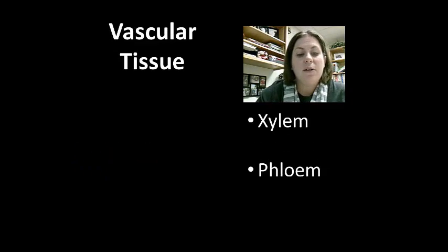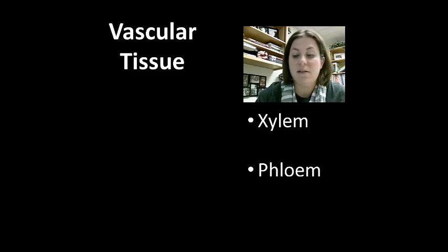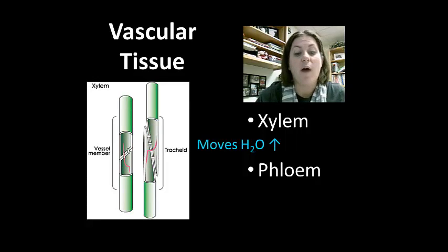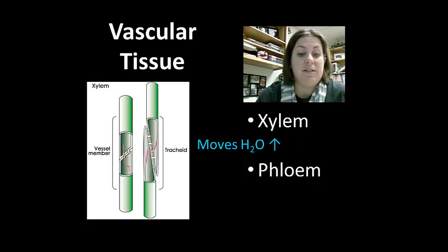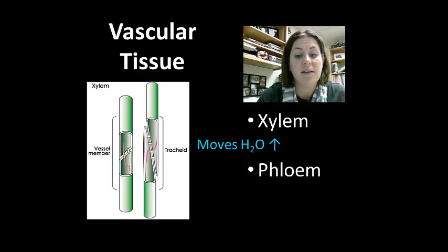Vascular tissue is composed of xylem and phloem, which both function in transport but move different substances. Xylem is composed of vessel elements and tracheids, acting as a pipeline to move water and minerals up from the roots to the leaves. These mature cells are non-living when functioning.